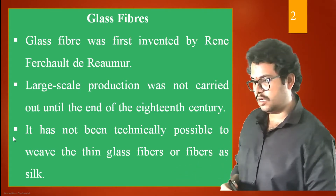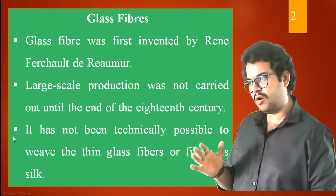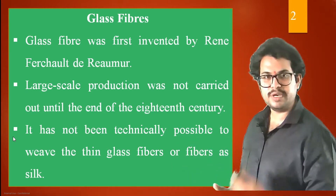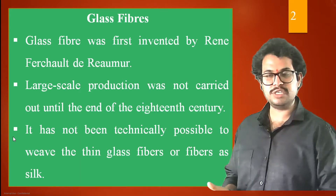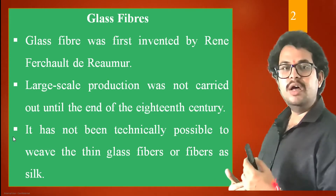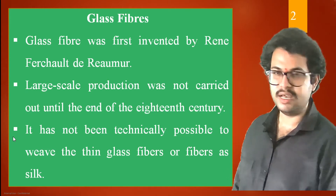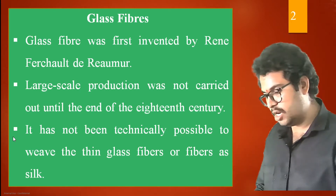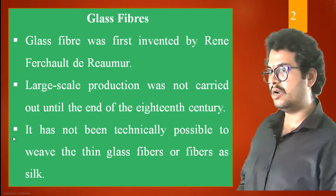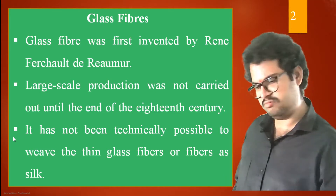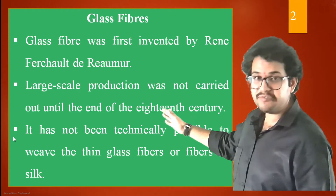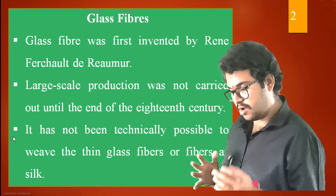Though there was not large scale production until the 18th century, after the 18th century glass fiber utilization came into picture and different organizations and industries started using this glass fiber to fabricate different types of fiber reinforced composites. It was not technically possible due to the mechanisms available at that particular point of time or the expertise of the persons involved.